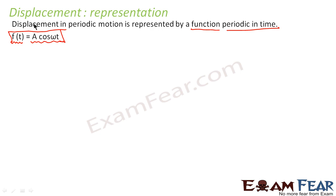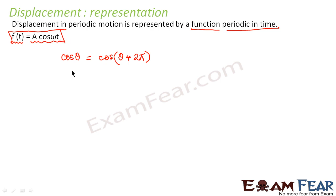This expression is periodic in time because it is a cosine function, and the cosine curve repeats itself after every 2π. As you must have studied in trigonometry, the value of cos θ repeats itself after 2π, that is cos θ = cos(θ + 2π). So A cos(ωt) will repeat itself after every 2π, making this a function which is periodic in time.